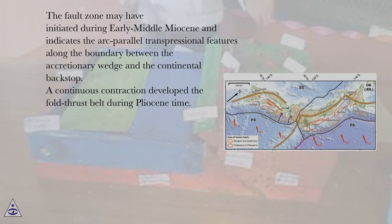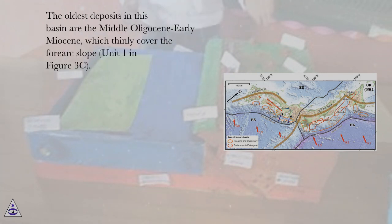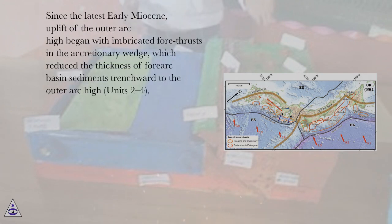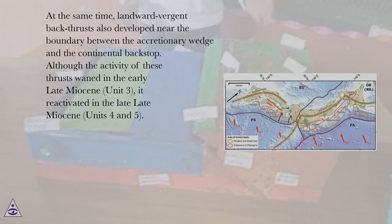A continuous contraction developed the fold-thrust belt during Pliocene time. The oldest deposits in this basin are the middle Oligocene to early Miocene, which thinly cover the forearc slope, unit 1 in figure 3c. Since the latest early Miocene, uplift of the outer arc high began with imbricated forethrusts in the accretionary wedge, which reduced the thickness of forearc basin sediments trenchward to the outer arc high, units 2 to 4. At the same time, landward vergent backthrusts also developed near the boundary between the accretionary wedge and the continental backstop.